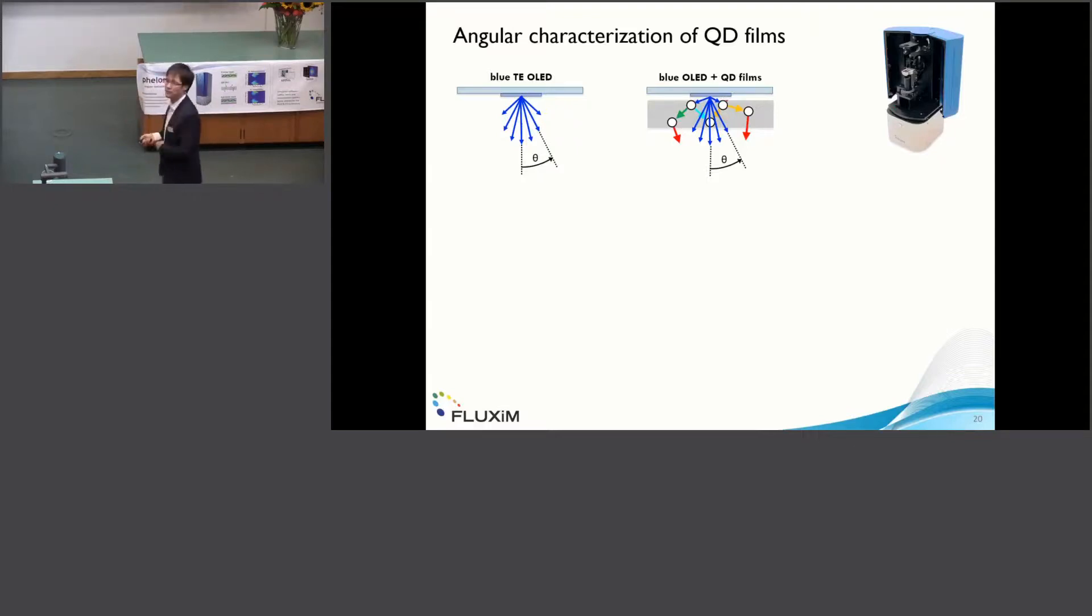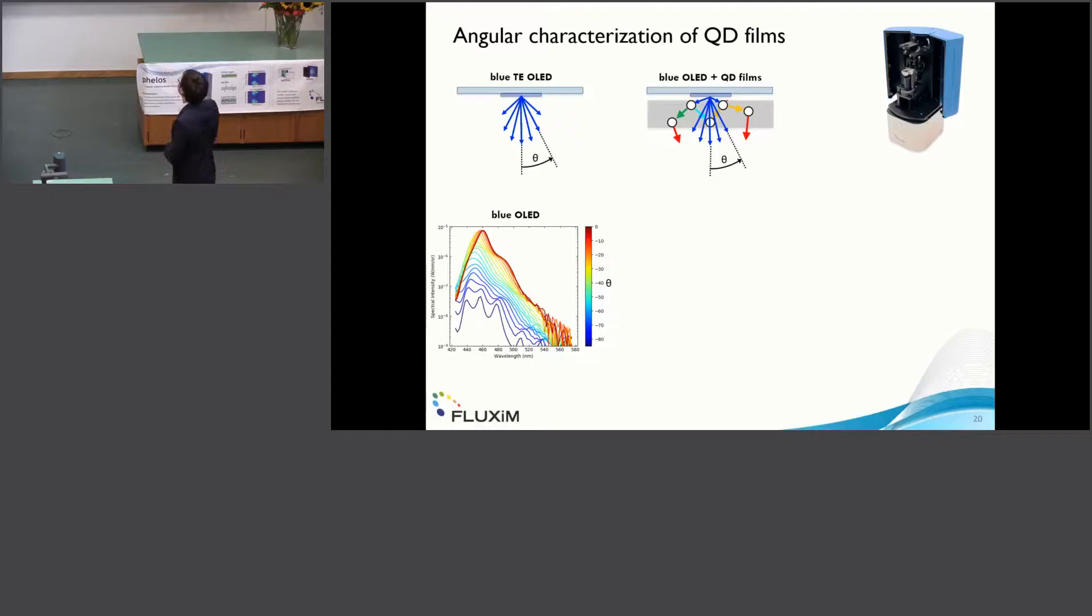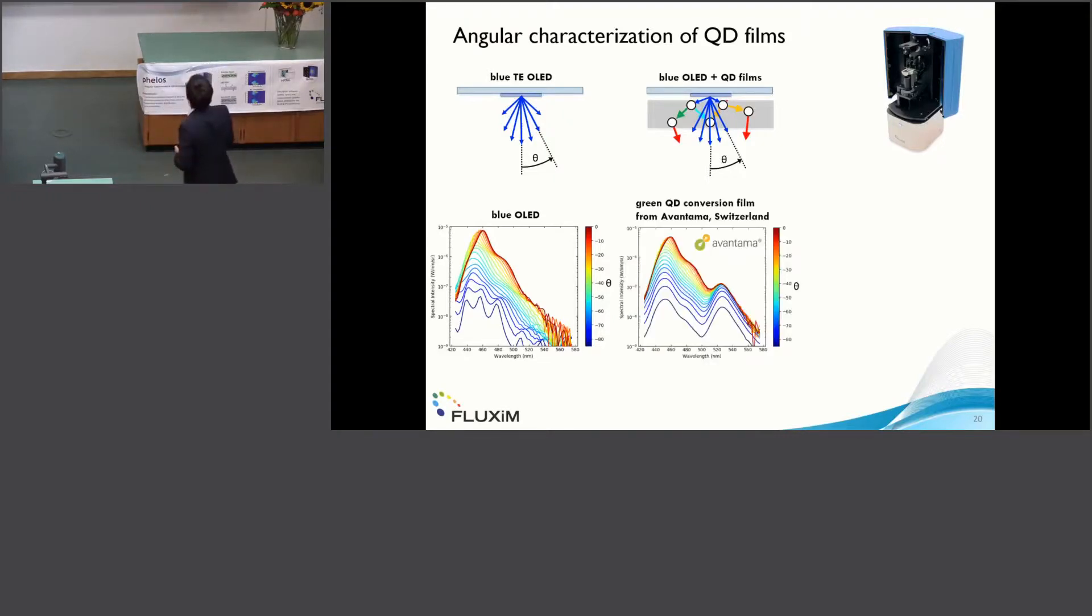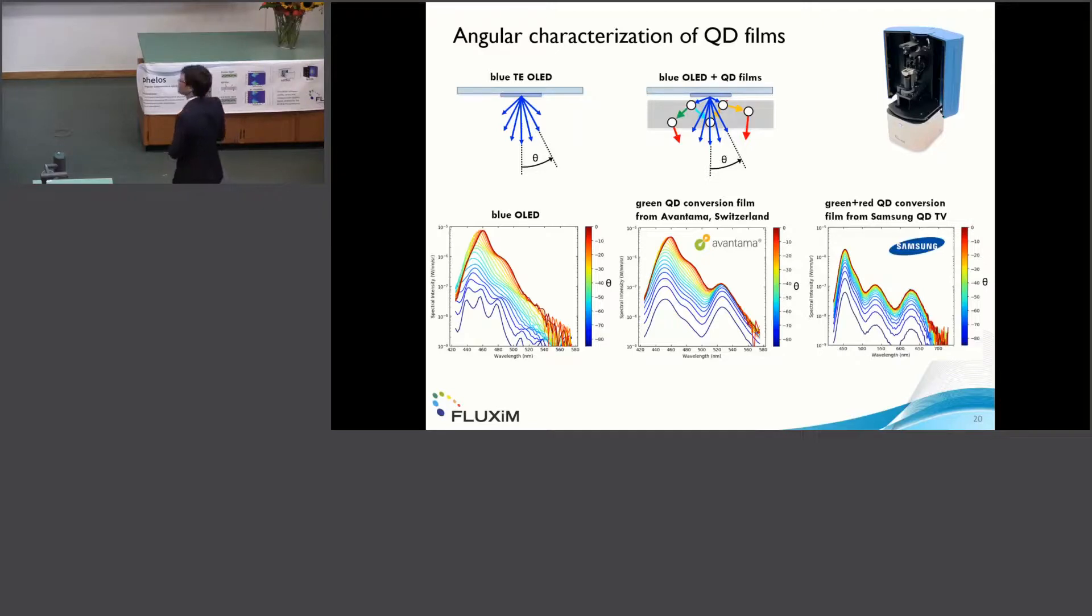What we have been doing is we took a blue OLED as a backlight for the down-conversion film, and then we first measured the angular dependence of this blue OLED, which looks like this. We have, of course, the highest emission at zero degrees angle, and you can see how the spectrum changes as a function of the angle. Afterwards, we packed this blue OLED on top of the down-conversion film. This is actually a film from Avantama. This material has already been mentioned this morning, and we can see that a small fraction of the blue light is actually absorbed by the quantum dots and re-emitted in the green. Furthermore, we have some film from a Samsung TV model 2016, and we have done the same, and actually this film has a down-conversion into the green as well as into the red.